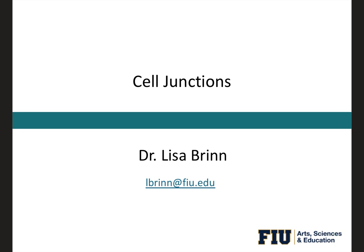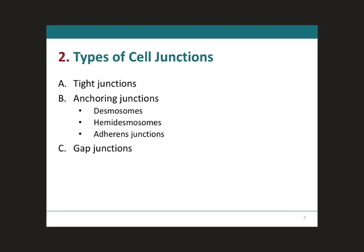For this lecture we're going to be covering cell junctions. We have three main general types, which are tight junctions, anchoring junctions, and gap junctions. Within the anchoring junctions there are three types: desmosomes, hemidesmosomes, and adherence junctions.